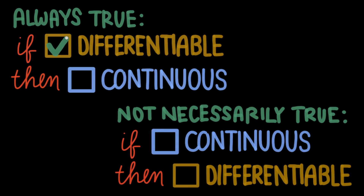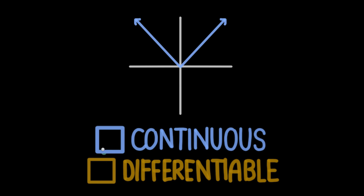We've just shown that if a function is differentiable everywhere, it implies that the function is also continuous everywhere. That's always true. But the opposite statement isn't necessarily true. Just because a function is continuous doesn't mean that the function is necessarily differentiable — it might be, but it might not be. Take a look at this curve, for example. It's continuous, but it isn't differentiable. There aren't any discontinuities, but the slope at this point isn't defined. This kind of point is called the corner, or the cusp, of a function, and any function that has one is automatically non-differentiable.